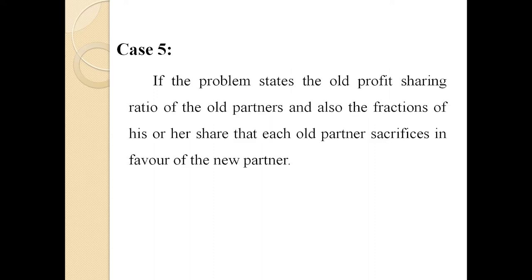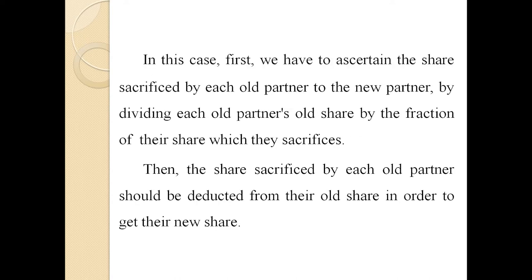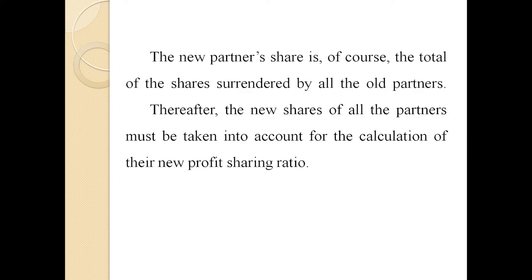Case number 5: if the problem states the old profit sharing ratio of the old partners and also the fractions of their share that each old partner sacrifices in favor of the new partner. In this case, first we have to ascertain the share sacrificed by the old partner by multiplying each old partner's old share by the fraction of their share which they sacrifice. Then the share sacrificed by each old partner should be deducted from their old share to get their new share. The new partner's share is the total of the shares surrendered by all the old partners. Thereafter, the new share of all the partners is taken into account for the calculation of the new profit sharing ratio.